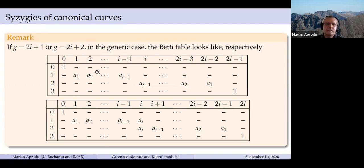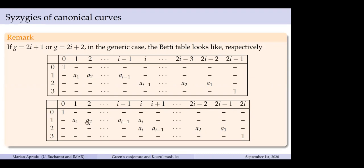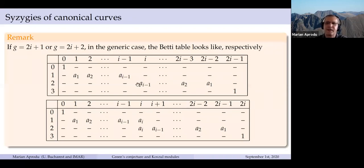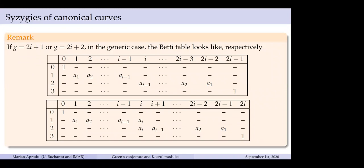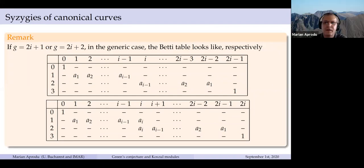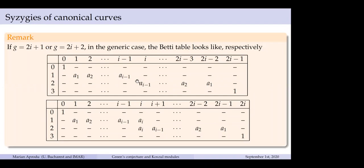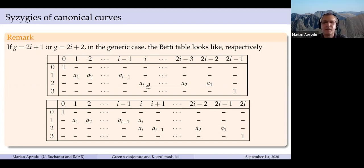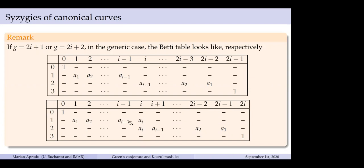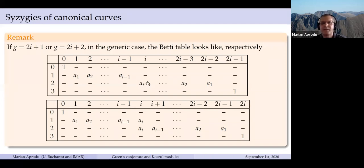An audience member asks for clarification on the dashes in the table, confirming they all mean zeros. The speaker explains that the entries on the main diagonal can never be zero — by an algebraic argument about alternating sums — so one cannot ask whether those particular entries vanish. The vanishing provided by Voisin is thus maximum possible in terms of what we can ask.